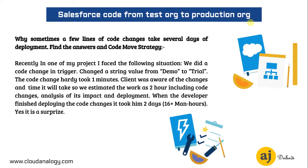Recently in one of my projects I faced the following situation. We were supposed to do a small change in a trigger — changing a string value from 'demo' to 'trial'. The code change hardly took us one minute. The client was aware of the changes and the time it would take, so we estimated the work as a two-hour task, including code changes, analysis of its impact, and deployment.